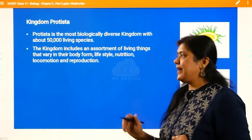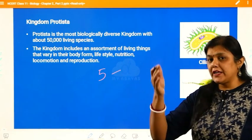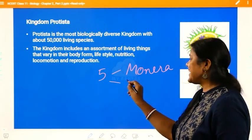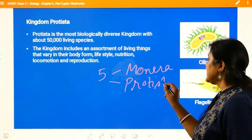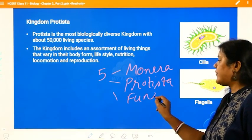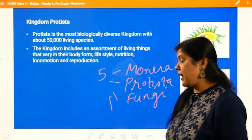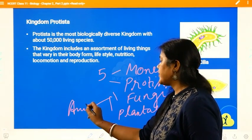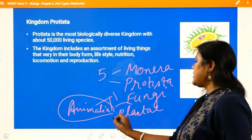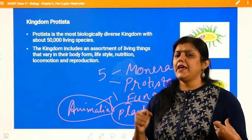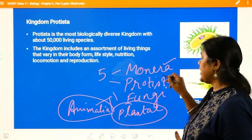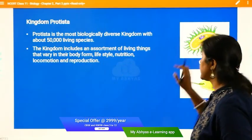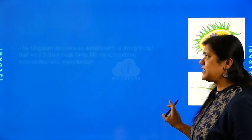Let me write down all five kingdoms one more time. The first kingdom, which includes prokaryotic organisms, is Monera. The second kingdom, which we are going to talk about today, is Protista. Then comes Fungi, and then we have two more advanced categories - plants, that is Plantae, and Animalia. We have already studied about Monera, so let us start with Protista - what are protistas and how can we know about them in detail.